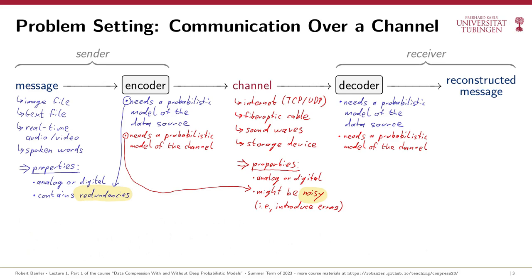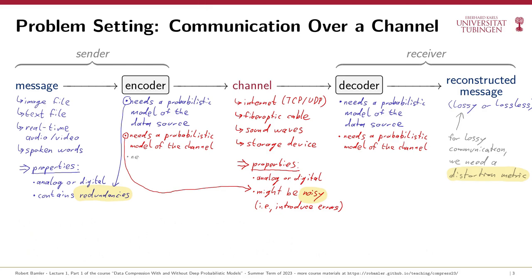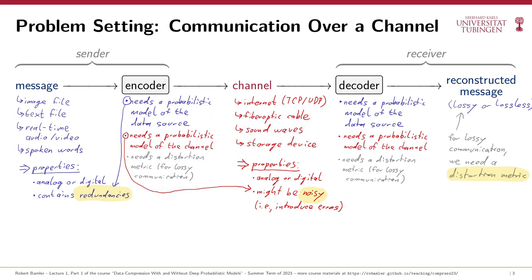These are the ingredients we need to design an encoder-decoder pair for lossless communication. But if you think about lossy communication, we also have to define what kind of distortion between the original message and its reconstruction is acceptable, so we'll need to define a distortion measure. Like the probabilistic models, the distortion measure also informs the design of both encoder and decoder, and you'll get the best performance if encoder and decoder agree on the distortion measure. Interestingly, the agreement on the distortion measure is not such a strict requirement, and there are sometimes good reasons to tweak the distortion measure the encoder uses even after sender and receiver have agreed on a compression method.